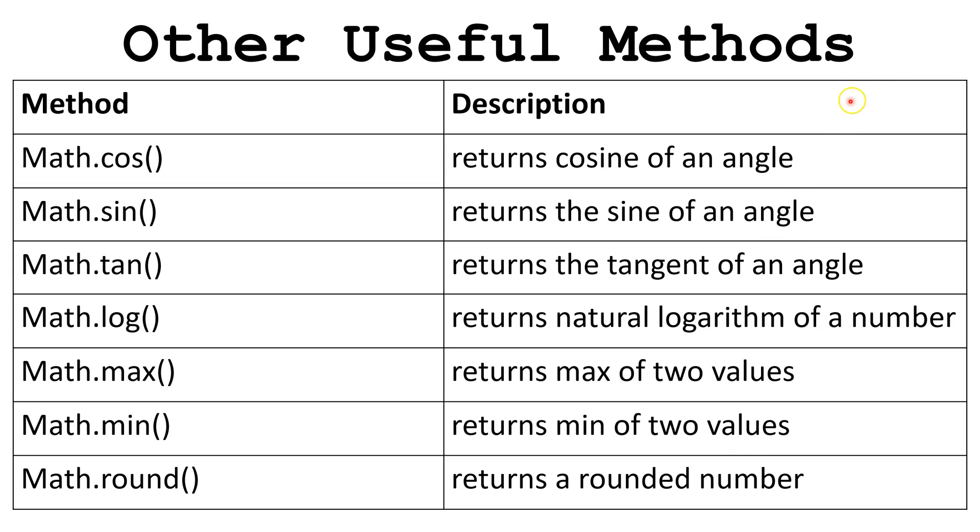Let's look at some other useful methods. Math.cos will give us the cosine of whatever angle we put in these parentheses. Math.sin will send us the sine of whatever angle we put in these parentheses.